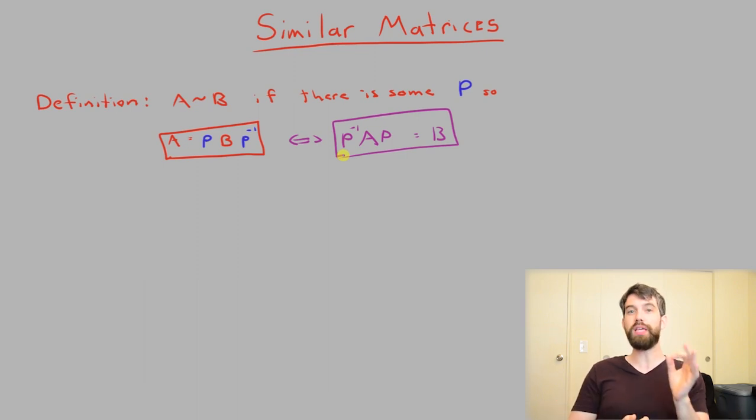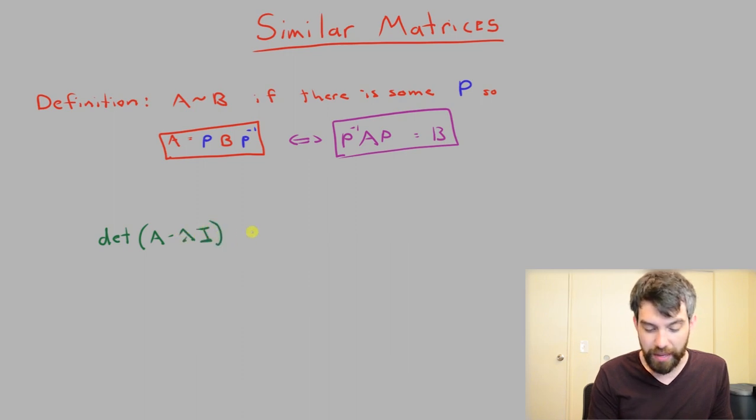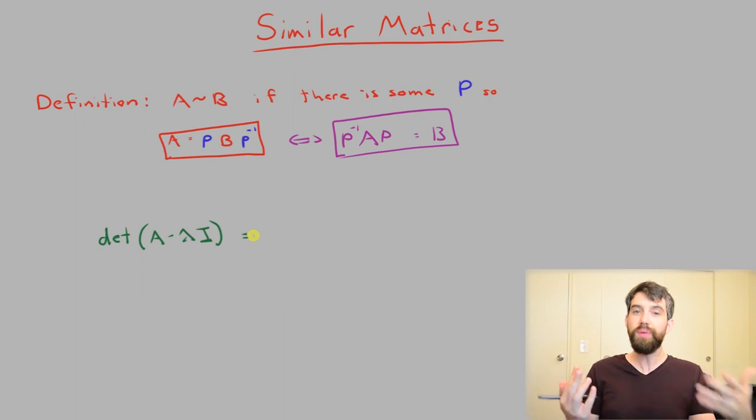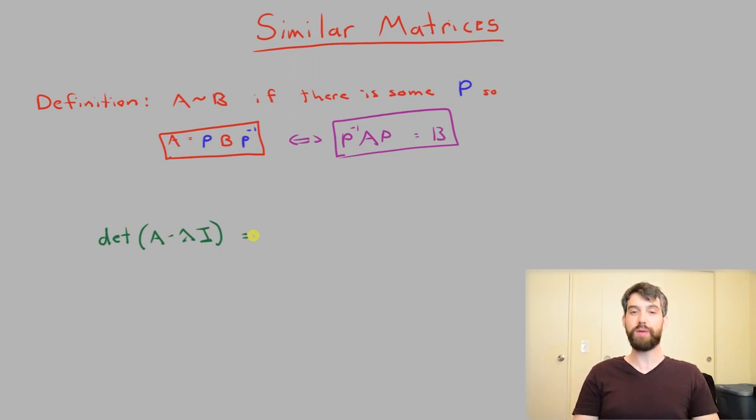The next one I'm going to show is really important for our computation of eigenvalues and eigenvectors. Let me take the determinant of A minus lambda I. Why am I interested in this? The determinant of A minus lambda I was part of how we computed eigenvalues. We would say that the determinant was equal to zero, and then we would say what lambdas gave that equation. That's how we found eigenvalues.